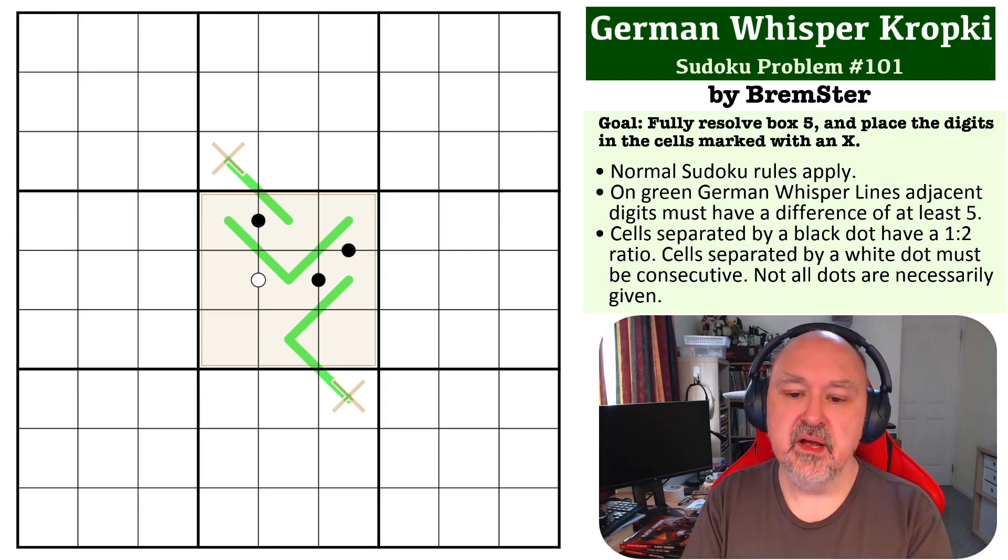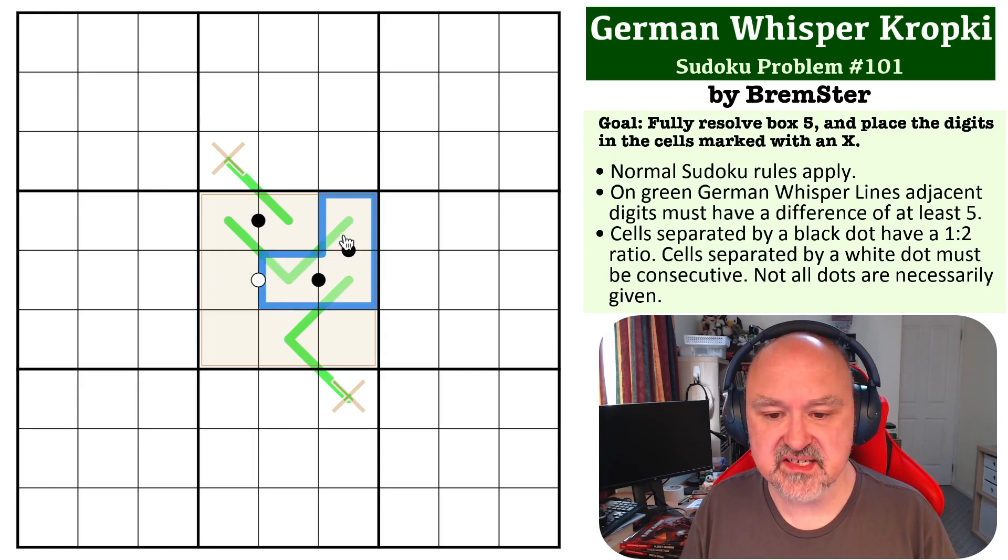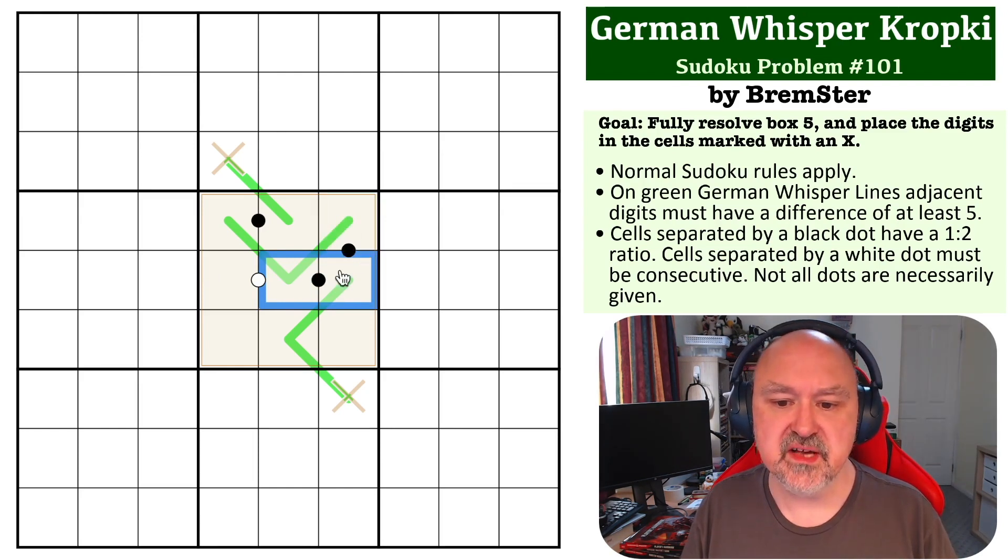There are a few places you can start on this one, but the place I like to start and where I recommend you start is on this black Kropki dot chain, because these are in a 1-to-2 relationship with each other. You can never put 5, 7, or 9 on a black Kropki dot because they're not in a 1-to-2 relationship with any other Sudoku digit.